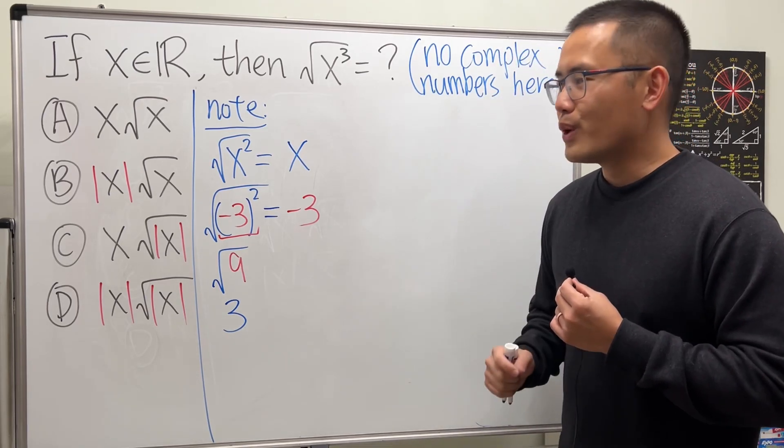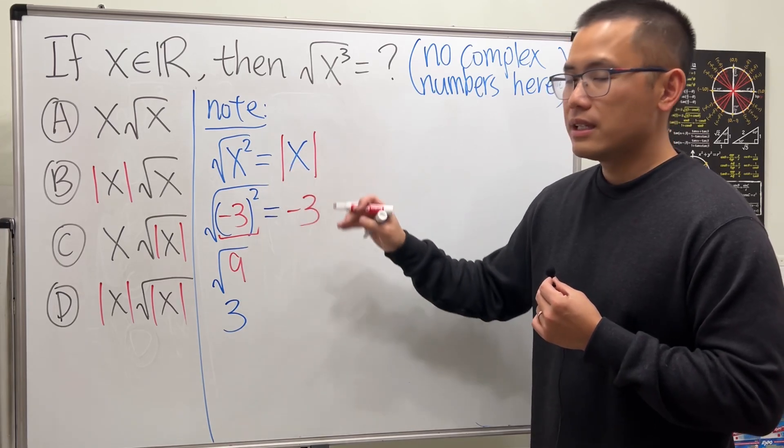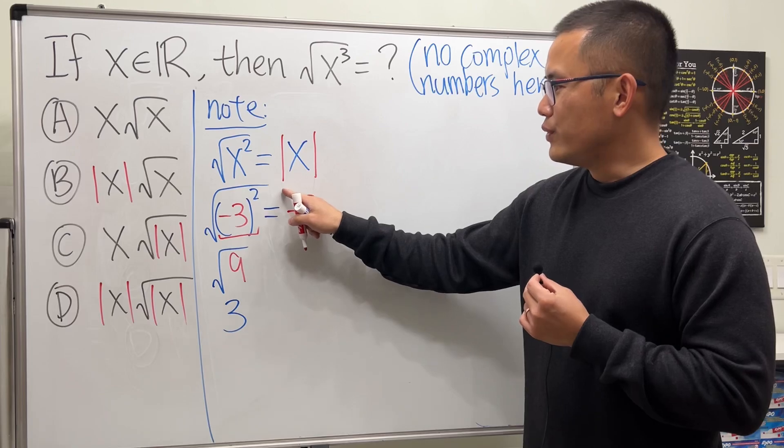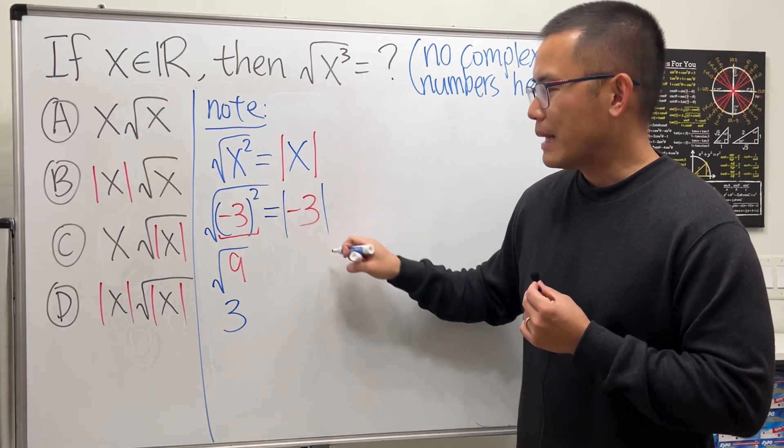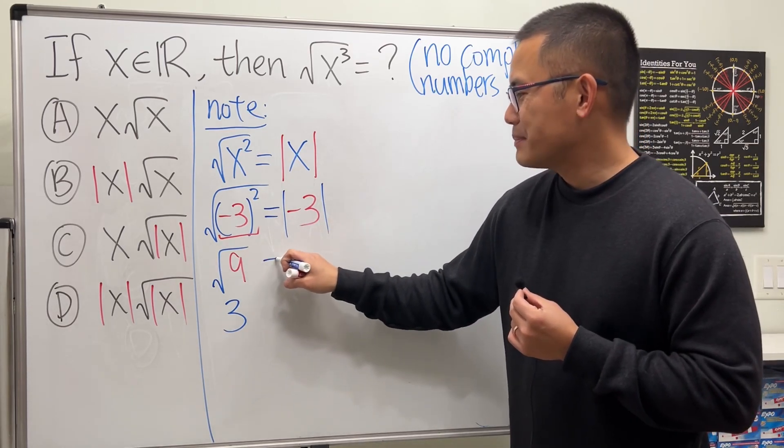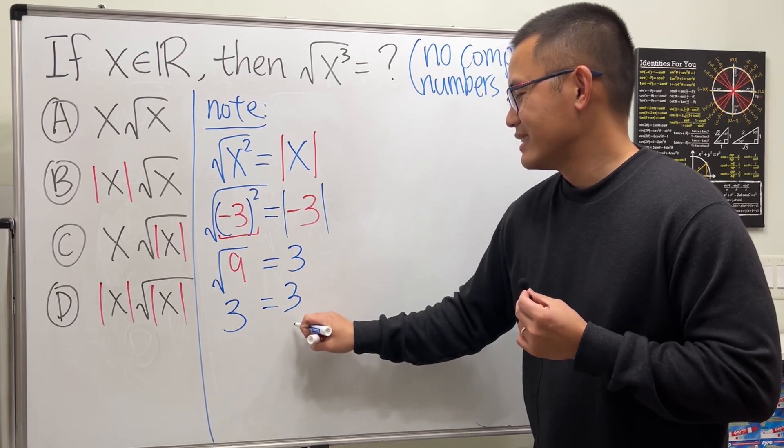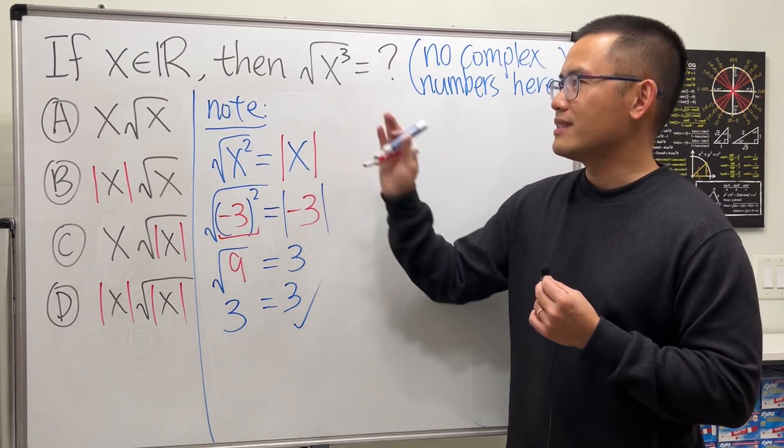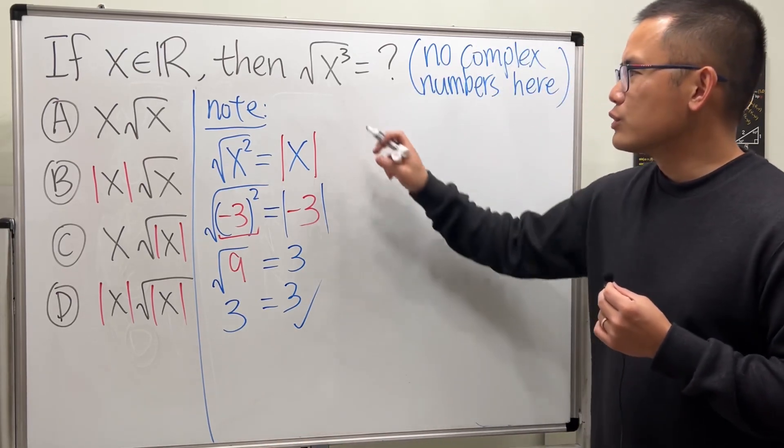So what do we do? Well, don't worry because we can just attach an absolute value around the x to force the result to be non-negative. So if you do the same thing, once you cancel the square root and then the square with the absolute value, you see absolute value of negative three gives us positive three. Of course it checks. So this is totally legit when x is a real number. Now I think this is what most of you guys were thinking about when we are trying to simplify square root of x to the third power.